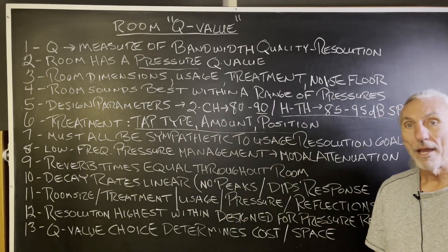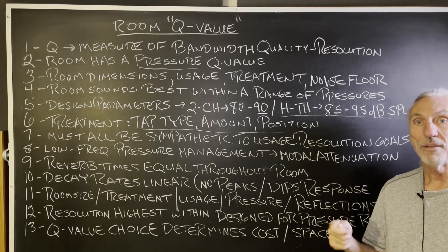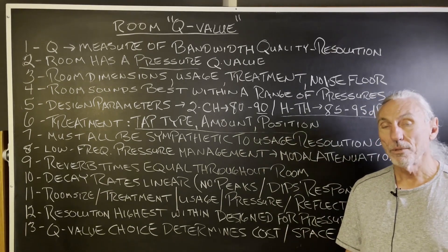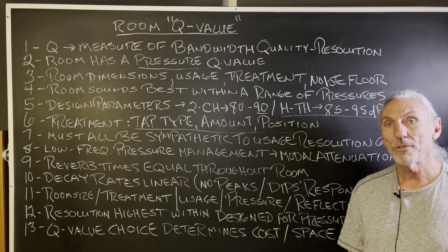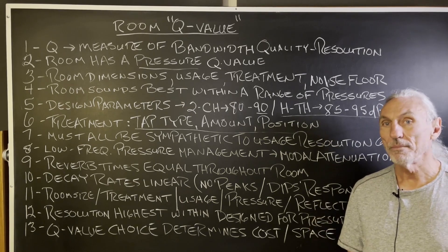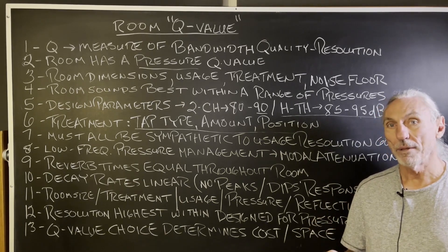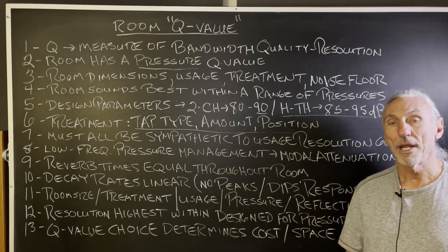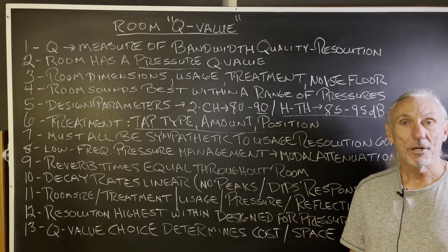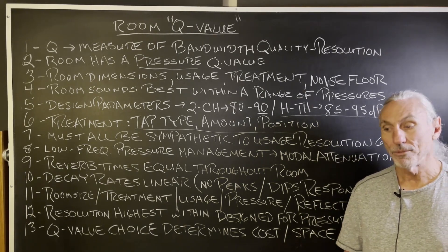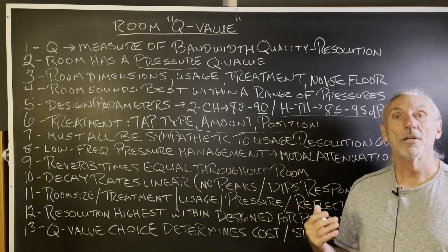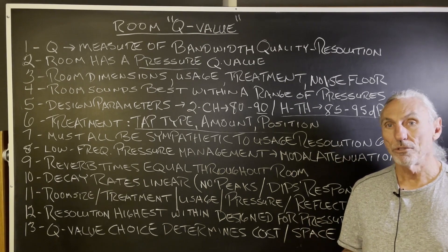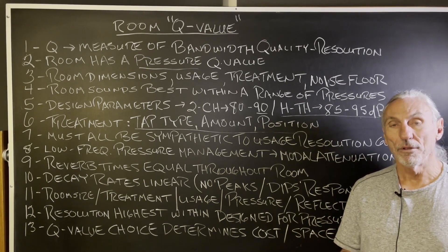For low frequency management, we have to address all four walls and the floor and ceiling. The floor-to-ceiling dimension is the smallest of the three, so it creates a lot of problems. People don't talk about that too much, but that floor-to-ceiling dimension is very, very critical. That's why we have our platforms and our CAW system — so for new builds, you can actually build treatment into the ceiling.